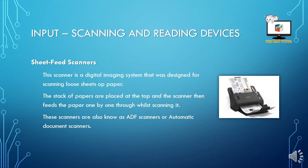Sheet feed scanners are a digital imaging system designed for scanning loose sheets of paper — not fragile photos; the flatbed scanner is ideal for those. If you have large amounts of paper and documents that need to be scanned in, the sheet feed scanner is the way to go. You can place a stack of papers on top and it will feed each paper one by one whilst scanning the content. These scanners can also be known as ADF scanners or automatic document scanners.